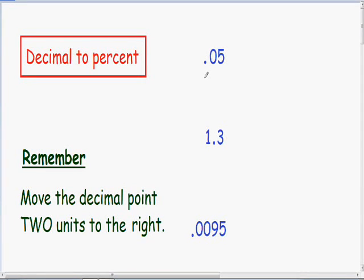Now I want to go over some more examples on changing decimals into percents. In my previous video, going from percent to decimal, we had to move the decimal point two units to the left. And now, when we have to change a decimal to a percent, we have to do exactly the opposite. We have to move the decimal point two units to the right. So let's get started right away with these examples.